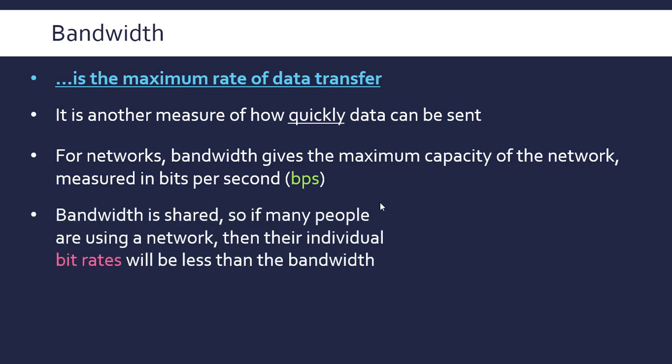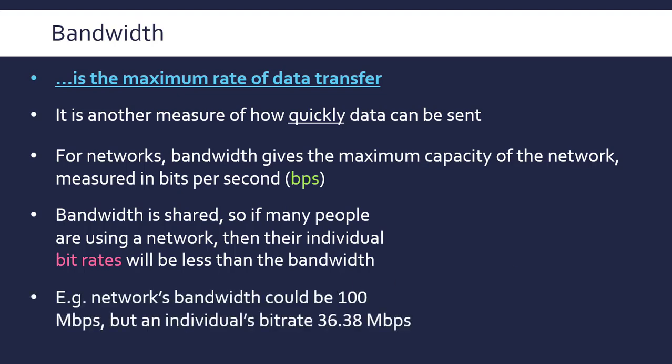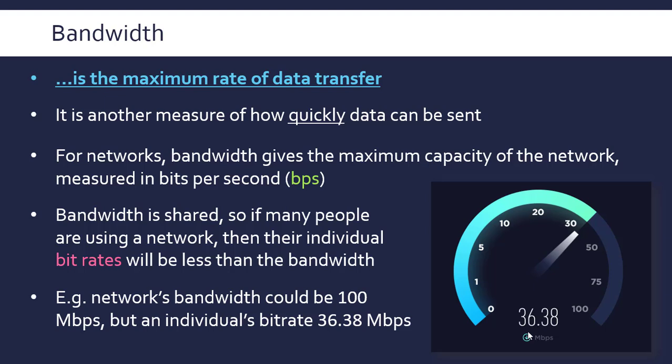Because bandwidth is the maximum capacity, when multiple people are using the network, it's shared between them. So the individual bit rates of the people using the network are going to be less than the bandwidth. If you have 100 megabit per second internet but your family are home using it, your individual bit rate is going to be less.